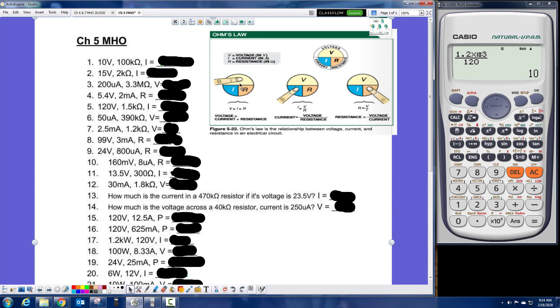So if I'm looking for volts, I cover up the V and it shows me I times R will give me V. If I'm looking for I, I cover up the I and it shows me V divided by R will help me find current. If I cover up the R, if I'm looking for R, it's V divided by I and I can find the resistance.